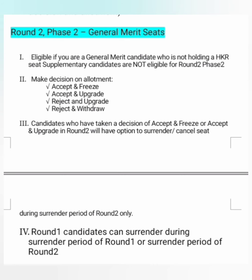Round 2 Phase 2 is basically for general merit seats coming from Round 1 counselling. Who is eligible? General merit candidates who are not holding an HKR seat. After Round 2 Phase 2, you will have to make similar choices as in Round 1: accept and freeze, accept and upgrade, reject and upgrade, or reject and withdraw. Regarding seat cancellation or surrender — students who can now surrender the seat for the second time: after Round 1 they were able to surrender, and after Round 2 they are also able to surrender and cancel the seat. This is the last time you can do this.